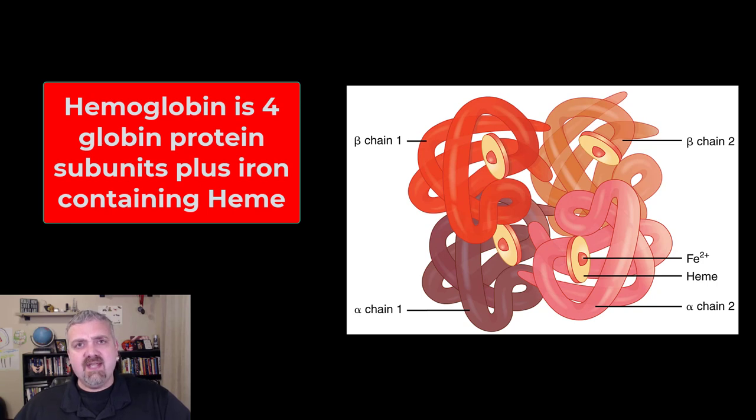So here you can see hemoglobin. About 95% of the protein in a red blood cell is hemoglobin. Hemoglobin is a combination of proteins and iron.